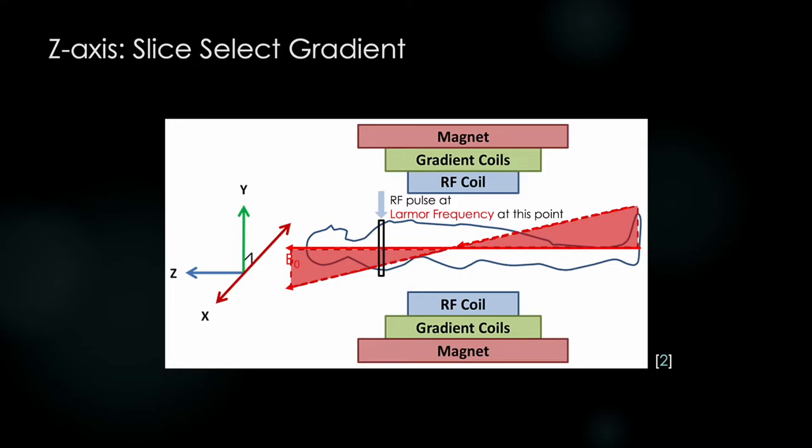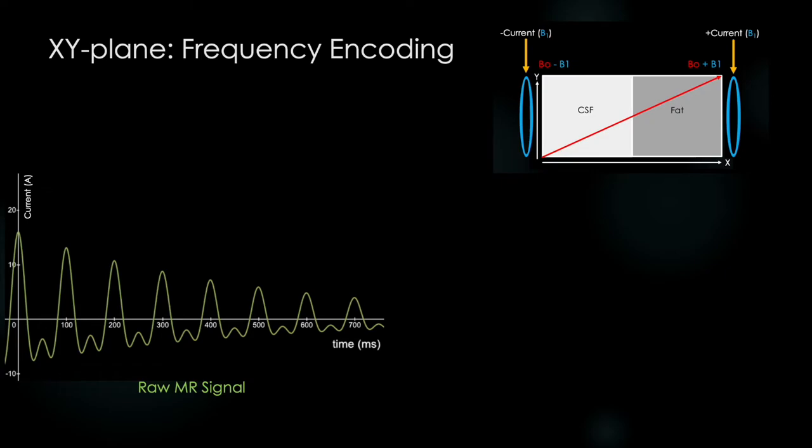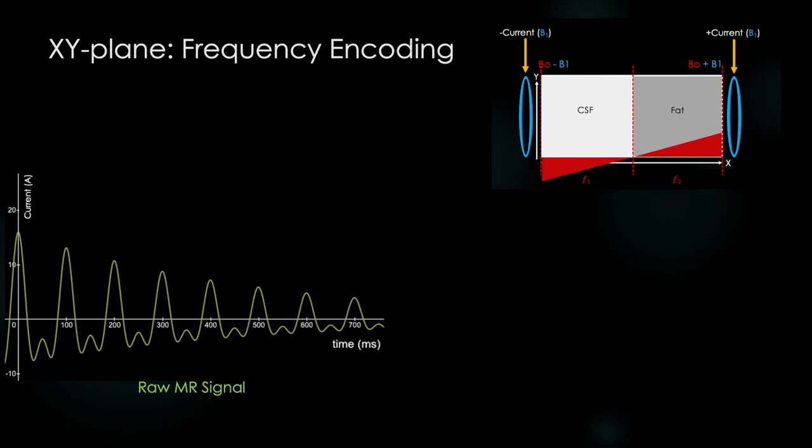The protons in our slice are already spinning, generating signal in our receiver coils, so we don't need another RF pulse. What happens if we simply turn these magnets on after slice selection and look at the signal? We get a much more complex looking signal now, and why is that?